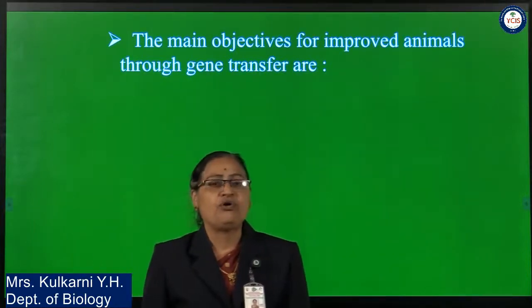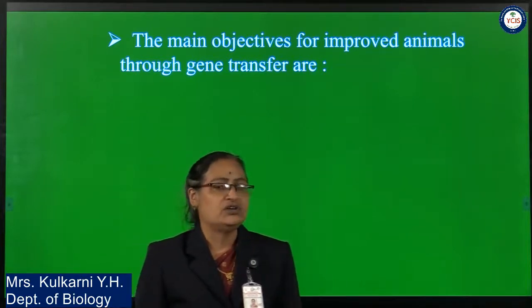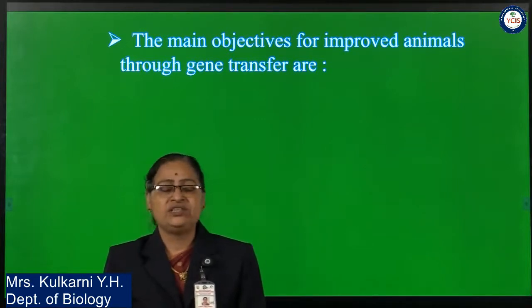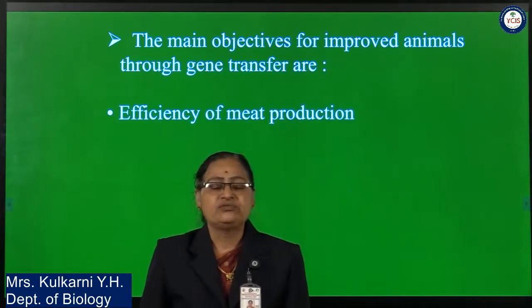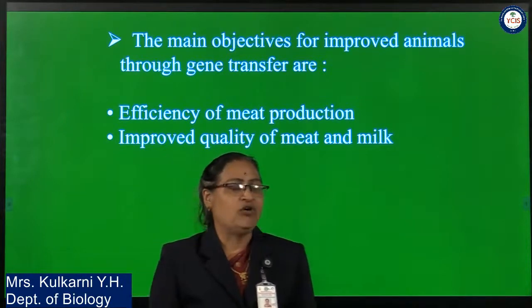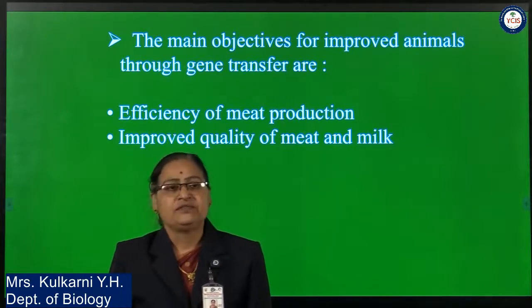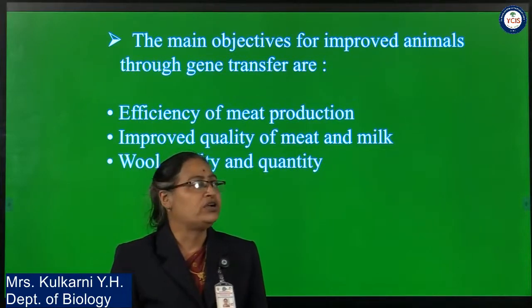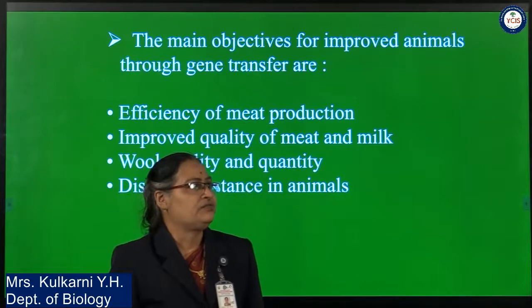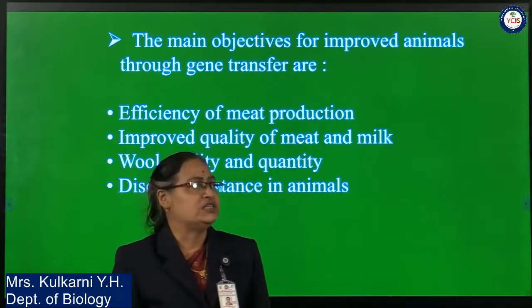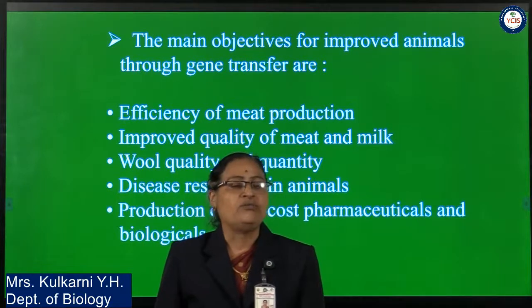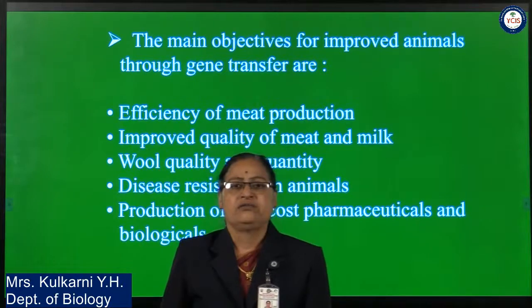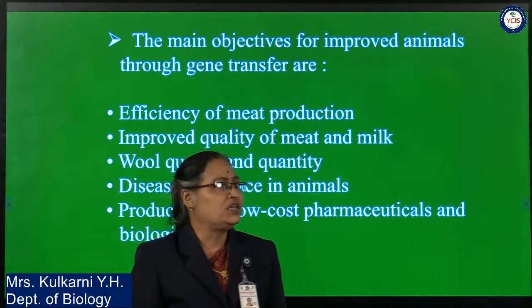The main objectives for improved transgenic animals through gene transfer are: efficiency of meat production; to maintain the quality and quantity of milk and meat production; to maintain wool quality and quantity; disease resistance, so these animals are free from diseases; and production of low-cost pharmaceuticals and biologicals.